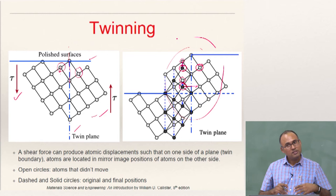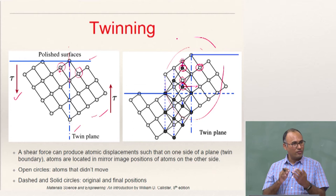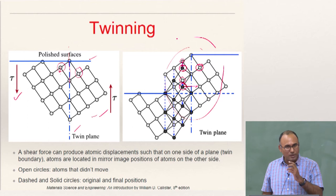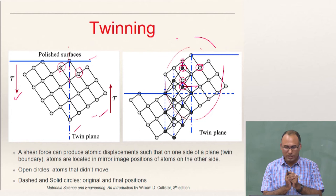The dislocations here can also help twinning. The amount of theoretical strength required for causing twinning deformation is usually much larger compared to when dislocations come and help the twinning deformation. The dislocation motion for twinning means the Burgers vector will not be integer multiples — slip will not be equal to integer multiples of the Burgers vector, but some non-integer multiples of the Burgers vector.